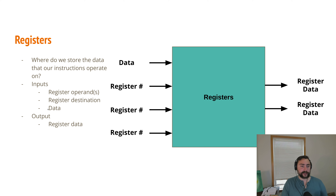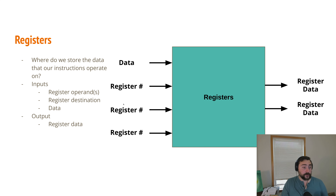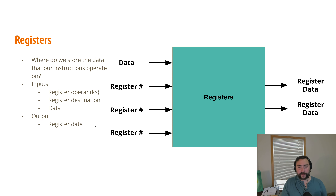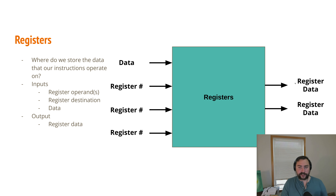We also have data as an input — what we might be writing into a register. If we do an ADD instruction, we might write the result back into our registers, specifying which three registers we're using: R1, R2, and R3. That write-back value comes in on the data line. As for outputs from our registers, data comes out of the register file — if we're accessing R1 and R2, the output will be the contents of those registers, the actual data stored in that memory.